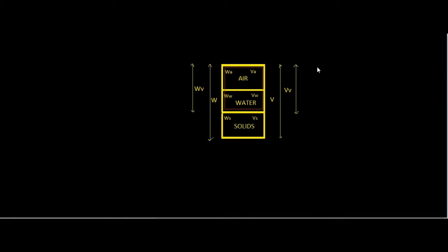For today's topic I'm going to derive a few formulas from this three-phase diagram — make sure you observe them carefully. Starting with the volumetric relationships: what is void ratio? Void ratio is basically the ratio of volume of the voids region to the volume of the solids region — that is the comparison between the volume of voids and the volume of solids. Void ratio is represented by the letter E.